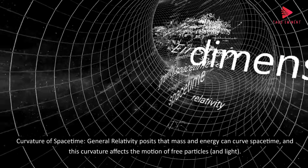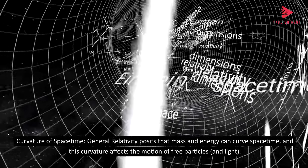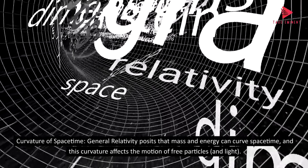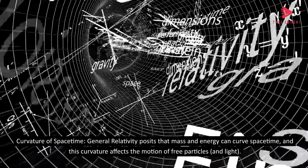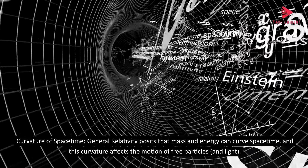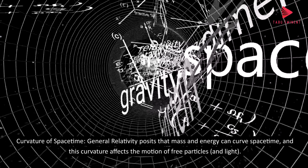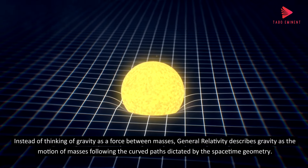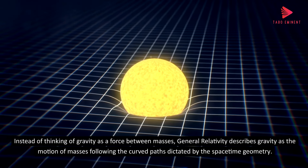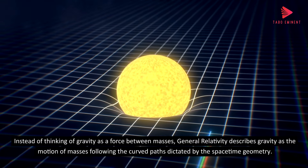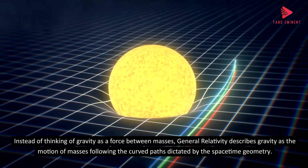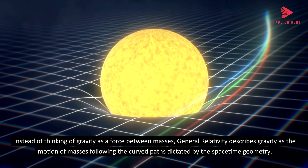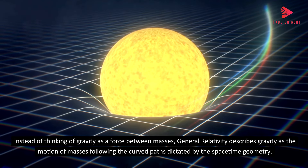Curvature of space-time. General relativity posits that mass and energy can curve space-time, and this curvature affects the motion of free particles and light. Instead of thinking of gravity as a force between masses, general relativity describes gravity as the motion of masses following the curved paths dictated by the space-time geometry.